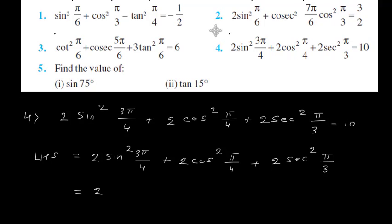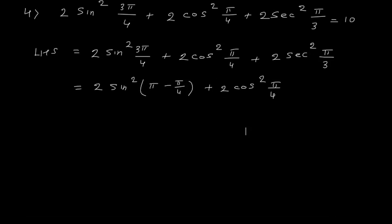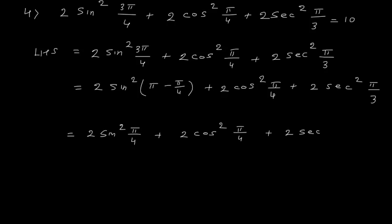Here 3 pi by 4 can be written as pi minus pi by 4. So this is 2 sin square pi minus pi by 4 plus 2 cos square pi by 4, plus 2 sec square pi by 3. Now sin(pi minus theta) is sin theta, so this becomes 2 sin square pi by 4 plus 2 cos square pi by 4 plus 2 sec square pi by 3.